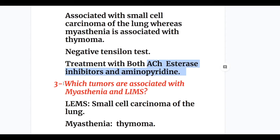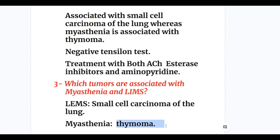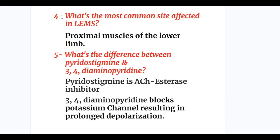Question three: which tumors are associated with myasthenia and LEMS? In LEMS there is small cell carcinoma of the lung, and in myasthenia there is thymoma. Question four: what's the most common site affected in LEMS? It's the proximal muscles of the lower limbs, whereas in myasthenia it's the eye muscles, causing descending weakness.